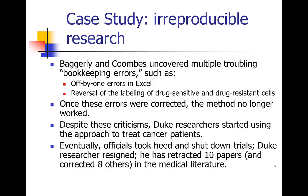If you talk about errors in the data, people's eyes glaze over. But talk about somebody falsifying their CV, and that got everybody paying attention. Officials finally took heed and shut down the trials at Duke. The Duke researcher ended up resigning, and there have been ten papers retracted and another eight corrected in the medical literature. This really uncovered a whole set of errors in the literature — and probably some fraud as well.